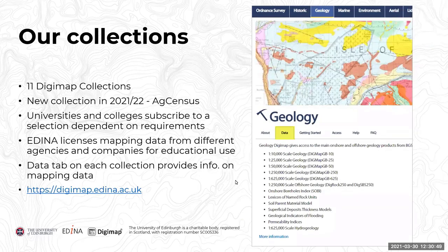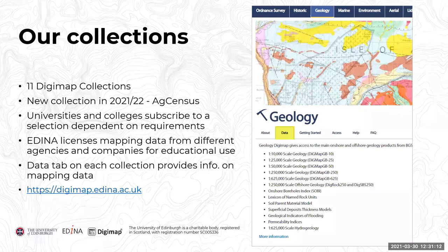We have 11 Digimap collections of mapping data available, and we have a new collection for the next academic year which is AgCensus — Agricultural Census data for Great Britain. Your university or college will subscribe to either all of our collections or a selection dependent on their requirements. If there is a collection you cannot access via your institution, talk to the people in your library or those responsible for purchasing learning resources.